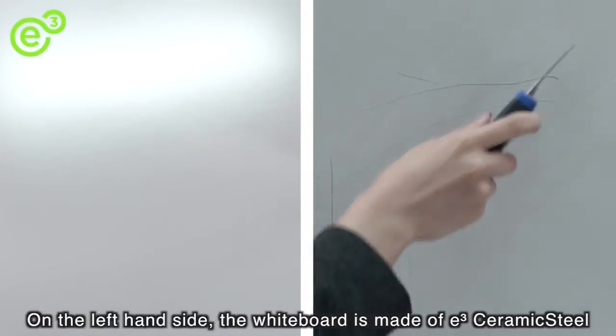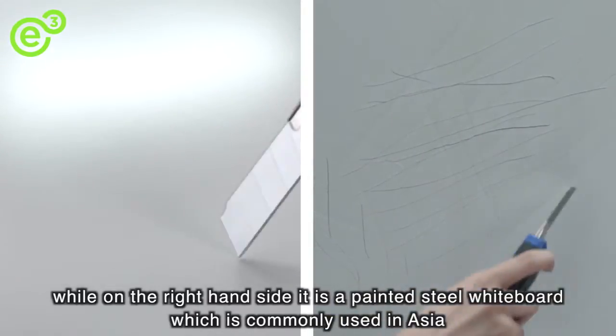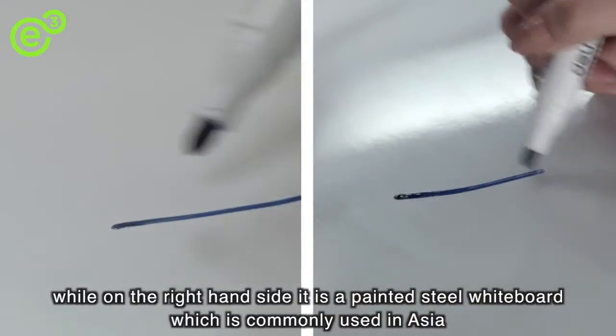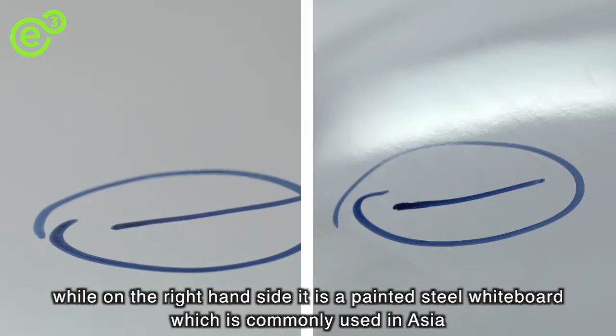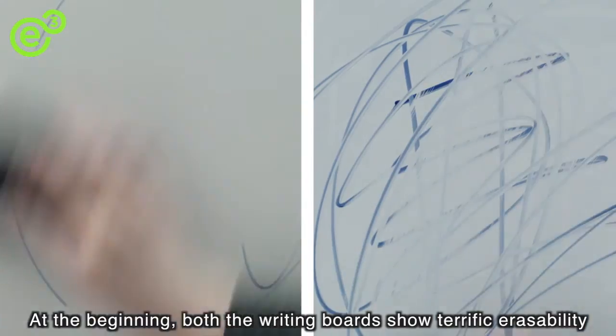On the left-hand side, the whiteboard is made of e³ CeramicSteel, while on the right-hand side, it is a paint steel whiteboard which is commonly used in Asia. At the beginning, both writing boards show terrific erasability.